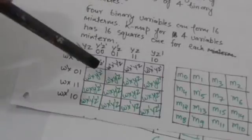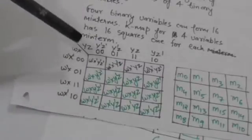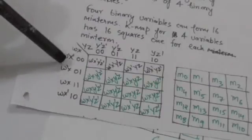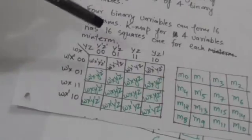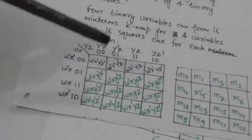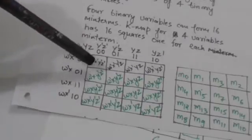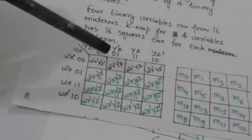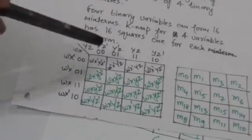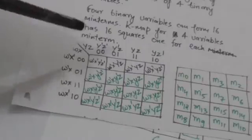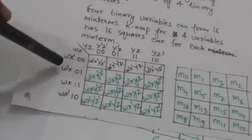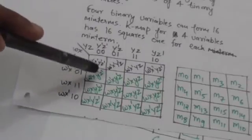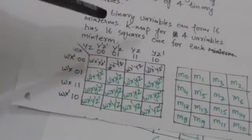The minterm represented by a square is obtained by concatenating the label of the row with the label of the column. For example, this square represents the minterm W-not X Y-not Z-not. It is obtained by concatenating the label of its row, which is W-not X, with the label of its column, which is Y-not Z-not.